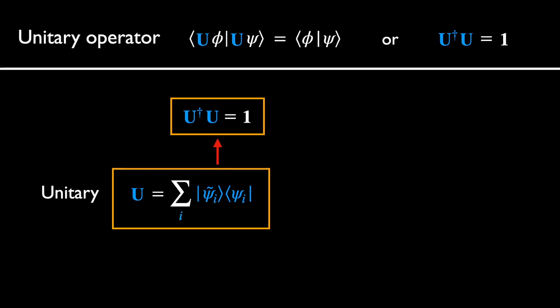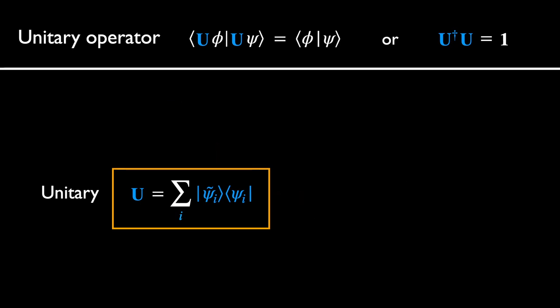For this we also need U-dagger. Using the orthonormality of the new basis, followed by the completeness of the old basis, we arrive at the desired result. Hence we have shown that the ket-bra representation which converts the psi basis to the psi-tilde basis is in fact a unitary operator. It is apparent by the same argument that U times U-dagger is also the identity, so U-dagger is really the inverse of U. This fact that any change of basis can be effected by a unitary operator is important in many proofs where we need to demonstrate that a relation is basis independent.